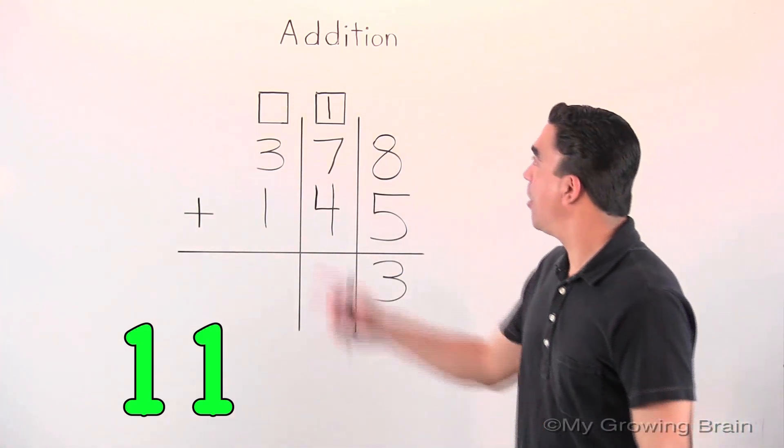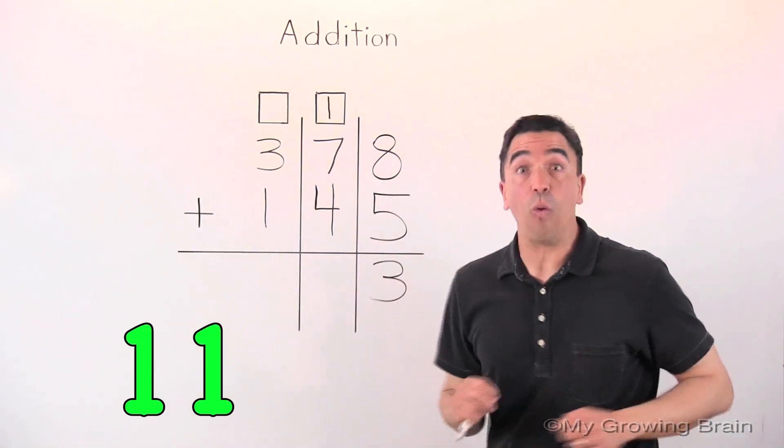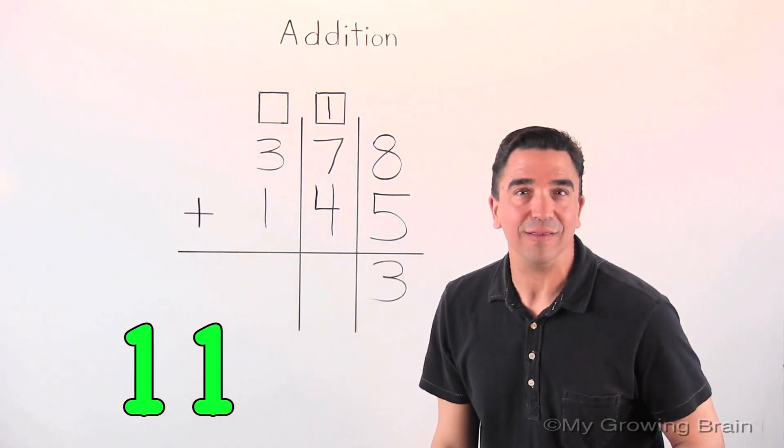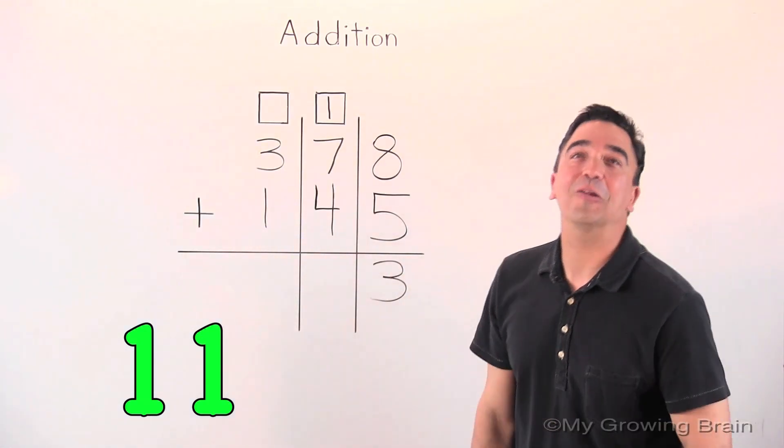But there's one difference. We have a one in the tens place in our work mat. So we have to add that one to our eleven. Eleven plus one is twelve.